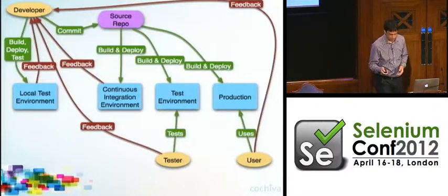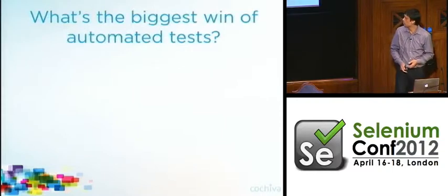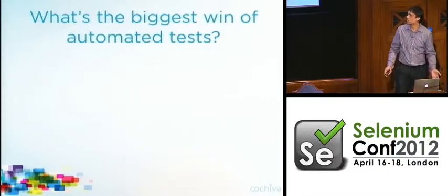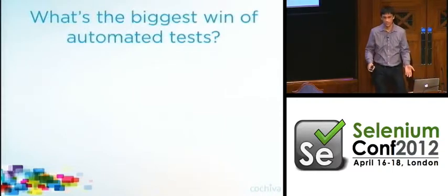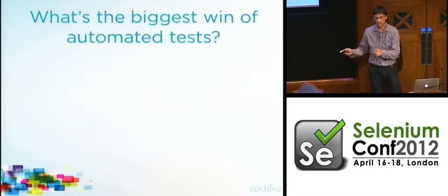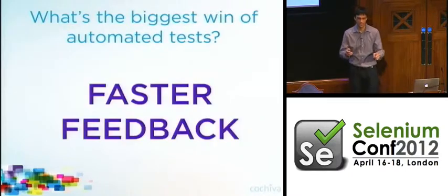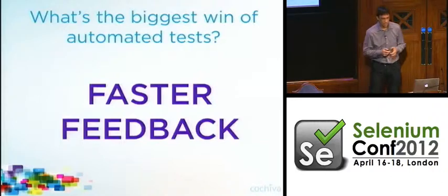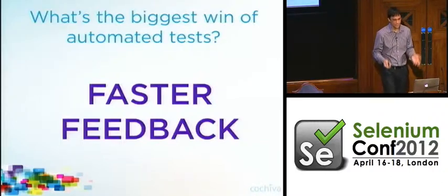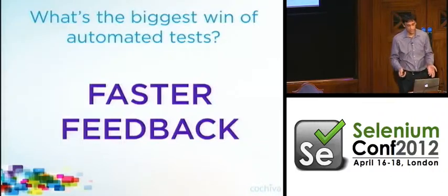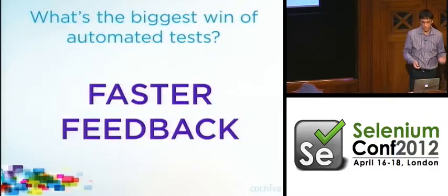So to sum up: what's the biggest win for automated tests? Faster feedback. Quick developer-test feedback helps me make changes with confidence as a developer without interrupting my flow.